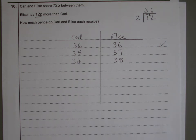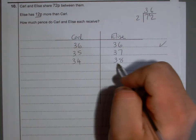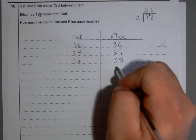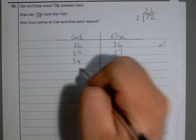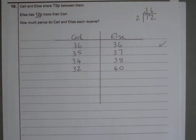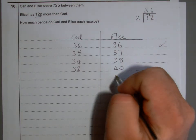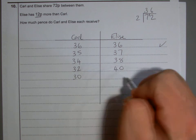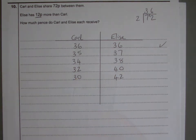Rather than increasing Elise by one penny at a time since the gap isn't wide enough, let's increase by a few more pence. If I increase Elise's share by two pence to 40 pence, I take two pence from Carl, leaving him with 32. The gap is now eight pence — getting closer. So let's take another two pence off Carl, giving him 30 pence, and give it to Elise so she has 42 pence.